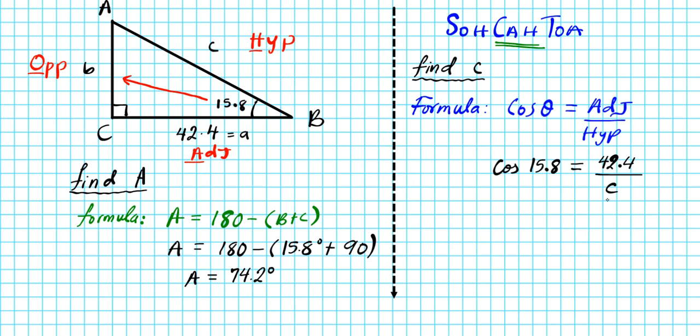Now how do we solve for little c? To find little c, we'll first multiply both sides by little c. We do not want the unknown in the denominator. So the little c's cancel out and we'll have c cosine 15.8 is equal to 42.4. Now to get little c isolated, we'll divide both sides by cosine 15.8. Now you have to note that cosine 15.8 is a package. They come together and they go together; do not separate them. Now we divide out cosine 15.8 on the left side, left with one c, and little c is going to be 42.4 divided by cosine 15.8.